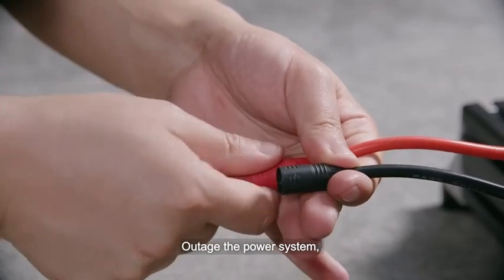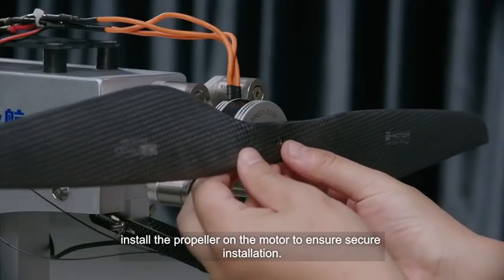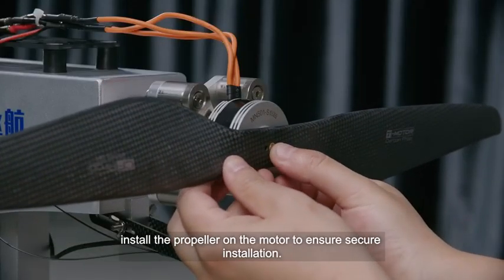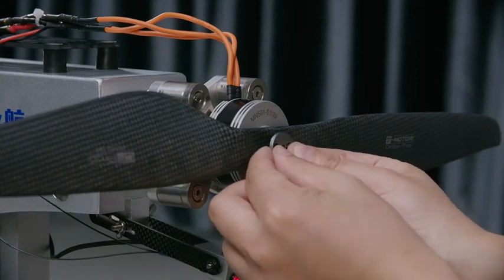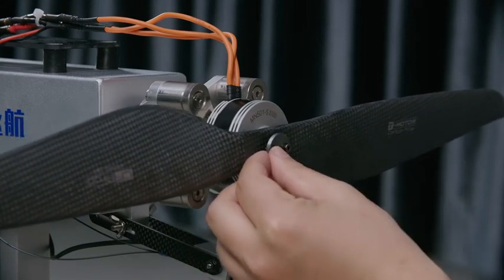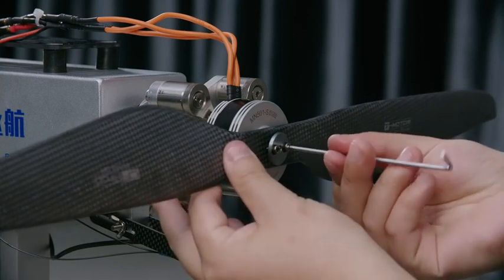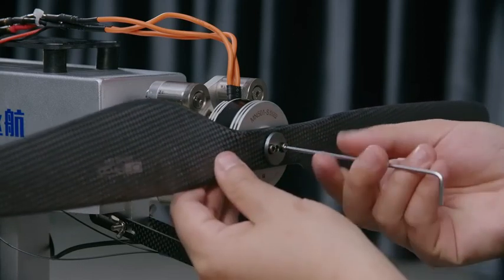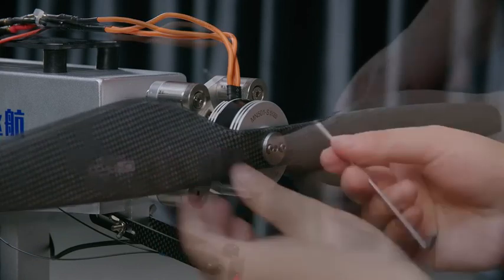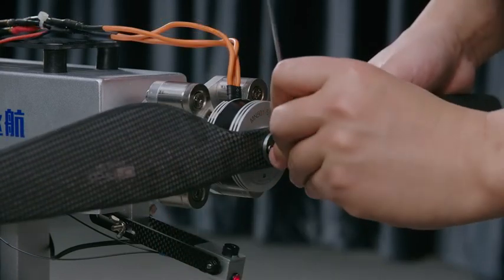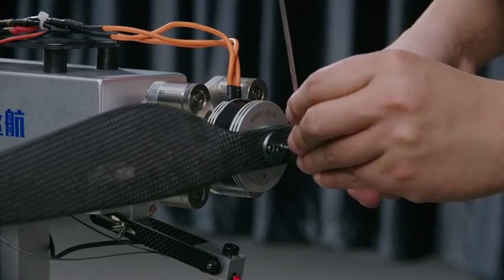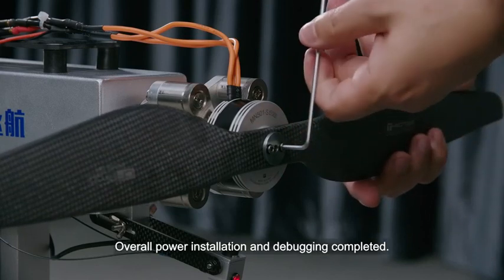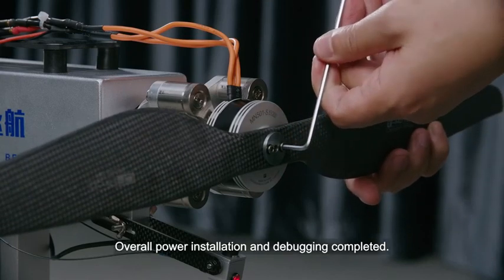Connect the power supply and drag the throttle again to check if the direction is correct. Outage the power system. Install the propeller on the motor to ensure secure installation. Overall power installation and debugging completed.